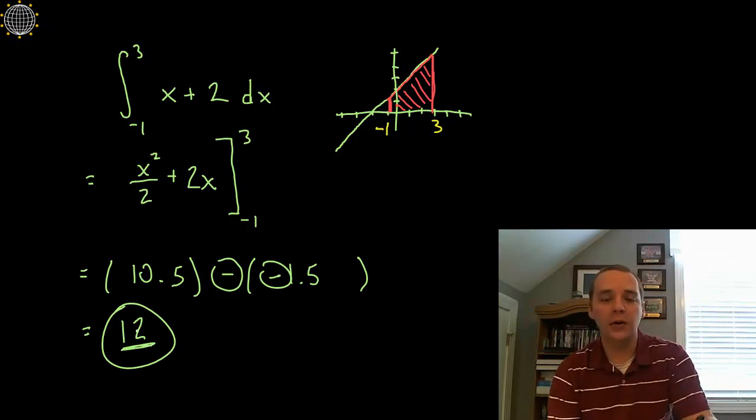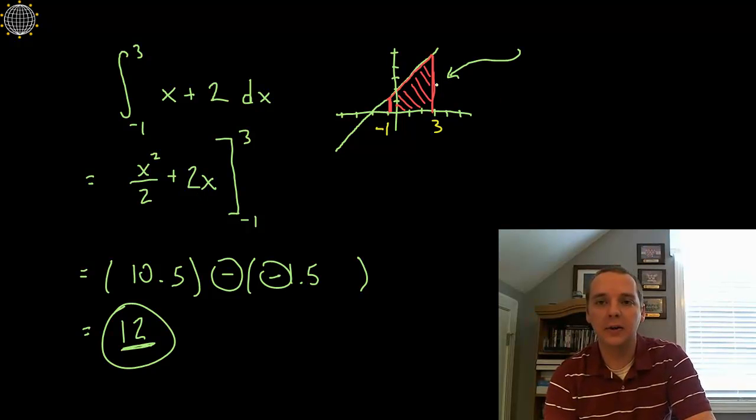Simplify this difference. A minus a negative will create a plus. 10.5 plus 1.5 makes a total of 12. Now what's 12? Well, using the fundamental theorem of calculus we've shown that the area under this curve here is a total of 12 square units of area.